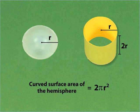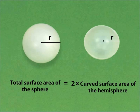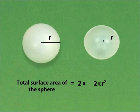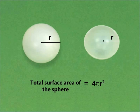The curved surface area of the hemisphere is 2πR². Thus, the total surface area of the sphere is 2 times the curved surface area of the hemisphere. Therefore, the total surface area of the sphere with radius R is 4πR².